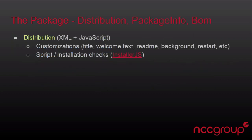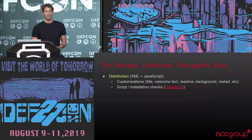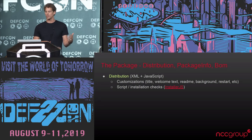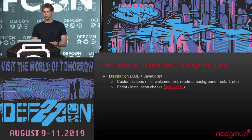The distribution file is the customization of the installer window. It gives it the title, the welcome text, if there's a license, if there's a readme, the background logo that is displayed, and determines whether you restart, shut down, or don't need to do anything after the installation is complete.